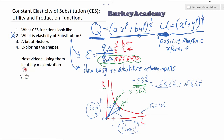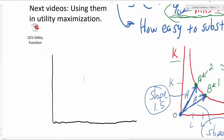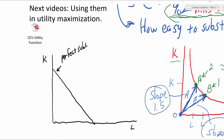The elasticity of substitution is always going to remain constant. Now let's get a feeling for what different values of this elasticity of substitution might mean. So let's think about labor and capital. If we had a production process where the isoquants looked like straight lines, this means the inputs are perfect substitutes — you can very easily substitute between capital and labor. We would say that the elasticity of substitution is infinity.